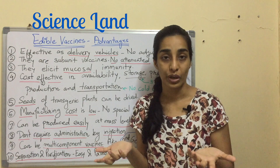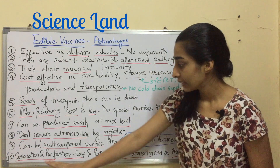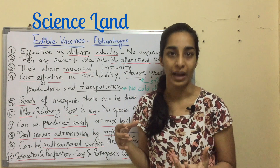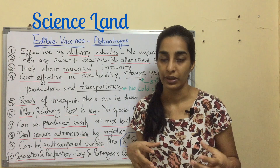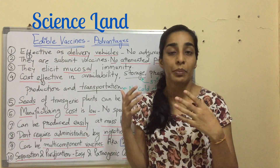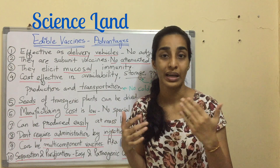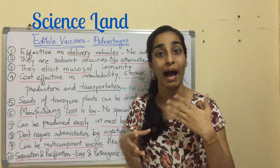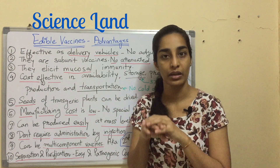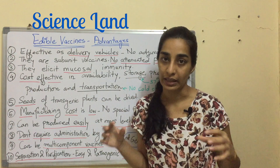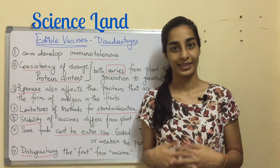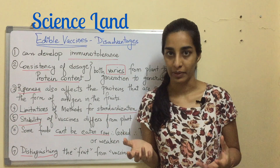The separation and purification is easy once the vaccine is produced in plants. Also, pathogenic contamination can be prevented. Because production is plant-based, there is no risk of contamination from animal cells, whereas traditional vaccines produced on animal cell culture carry that contamination risk. Those are the advantages.